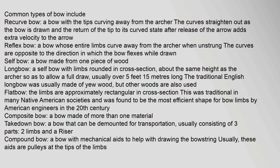Common types of bow include: the recurve bow, with tips curving away from the archer; the reflex bow, whose entire limbs curve away from the archer when unstrung; the self-bow, made from one piece of wood; the longbow, a self-bow about the same height as the archer, usually over 5 feet (1.5 meters) long; the flatbow, with approximately rectangular limbs in cross section; the composite bow, made of more than one material; the takedown bow, which can be demounted for transportation; and the compound bow, with mechanical pulleys at the tips of the limbs to aid drawing.